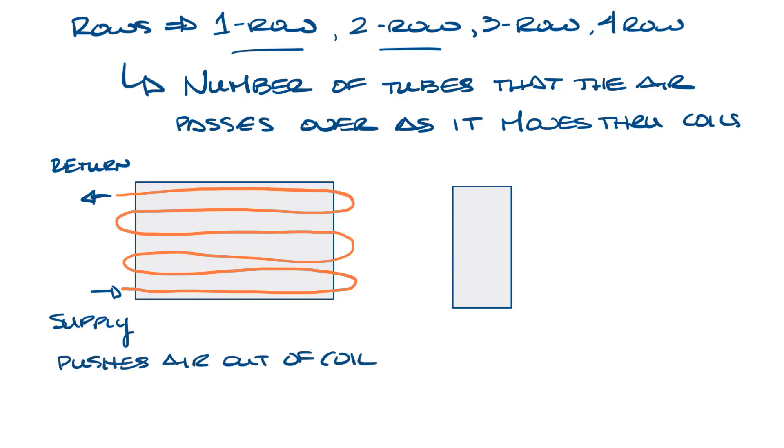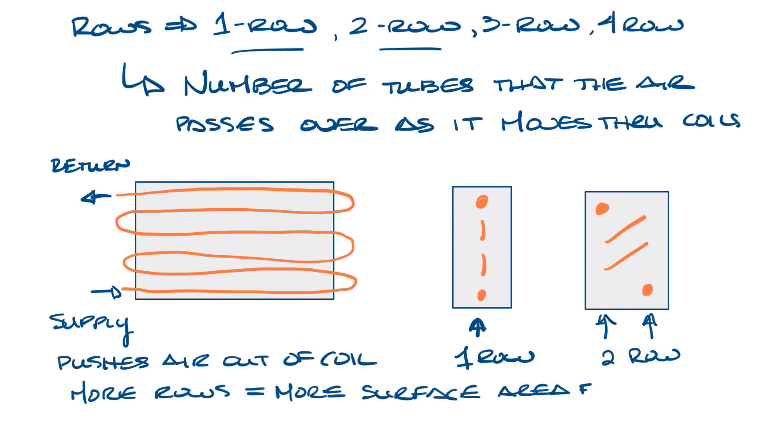This first one is all in a row, so that is one row. The second one, you can see that there are two rows, and so this is a two row coil. The more rows a coil has, the more surface area that's available for heat transfer. So a two row water coil will provide more heat capacity, but it also increases the air pressure drop across that coil.